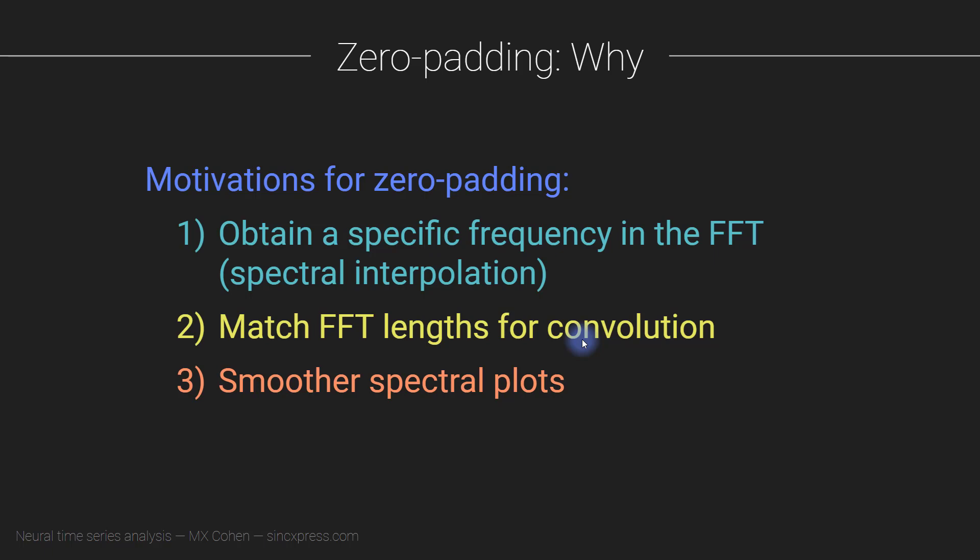Essentially what we want to do in convolution is take the FFT transform of two different time series, and then in the frequency domain we want to multiply their FFT spectra frequency by frequency. For that operation to be valid, their spectra need to have the same lengths. They need to match up in all of the frequencies, so it becomes necessary to zero pad your two signals to make sure that they have the same length, the same frequencies in the frequency domain.